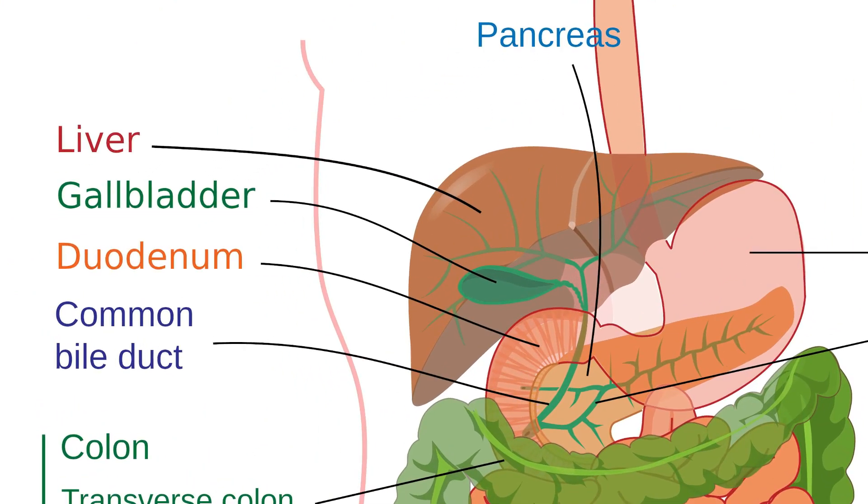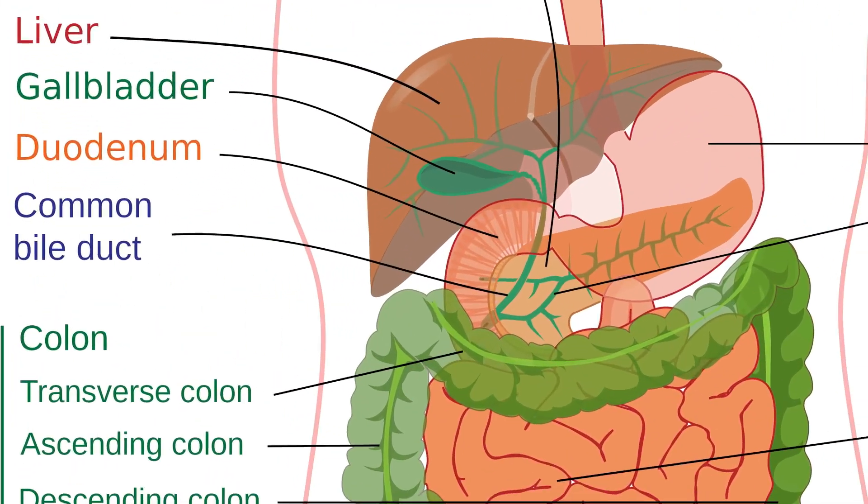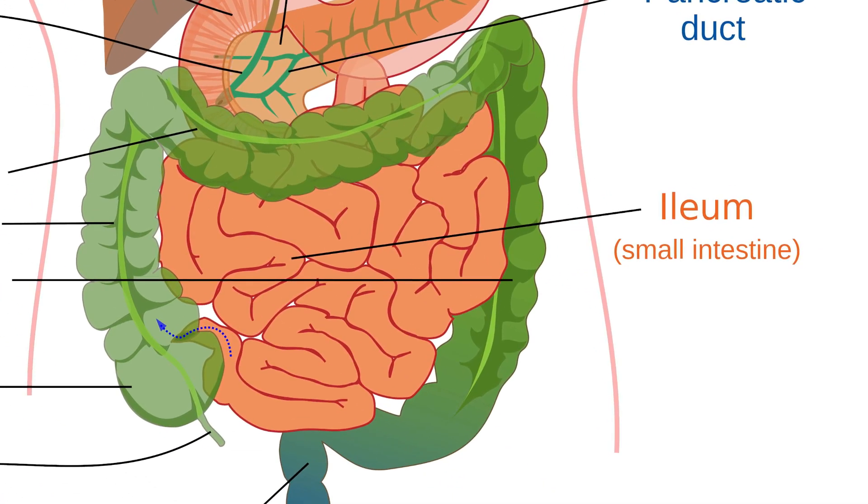In addition to bile from the gallbladder, the pancreas also adds other digestive chemicals in the duodenum, such as more of the enzyme amylase, which was first added in the mouth, remember. This is because most of the amylase from the mouth will have been denatured by the stomach acid. Next, this mixture of food and digestive juices passes into the main part of the small intestine. This is technically in two sections, the jejunum and the ileum, but the differences between them are pretty subtle, and at GCSE and iGCSE level, all you need to know about is the basic function and structure of the ileum.